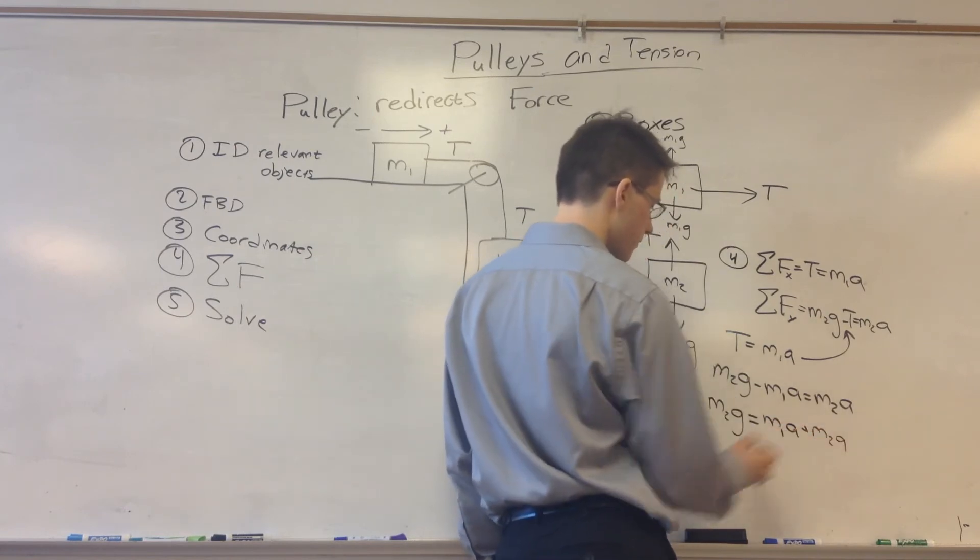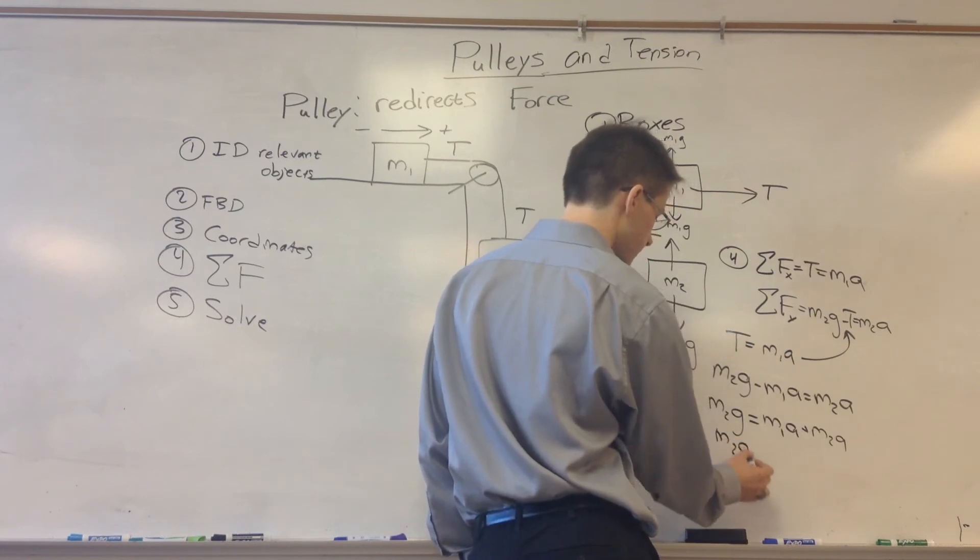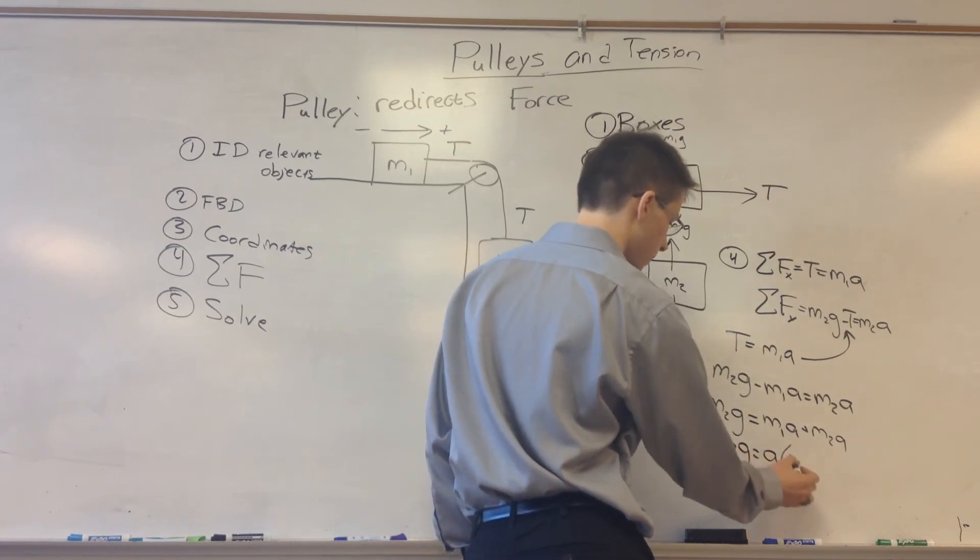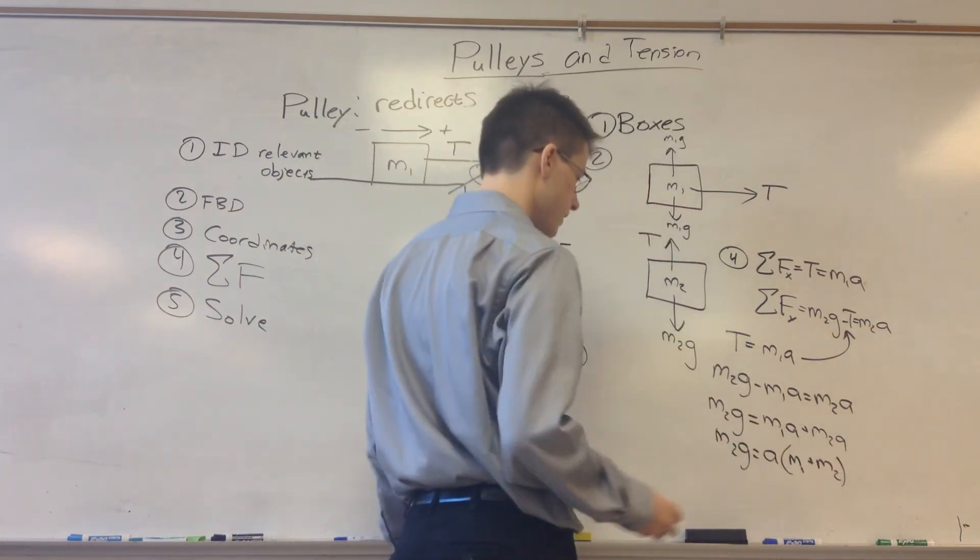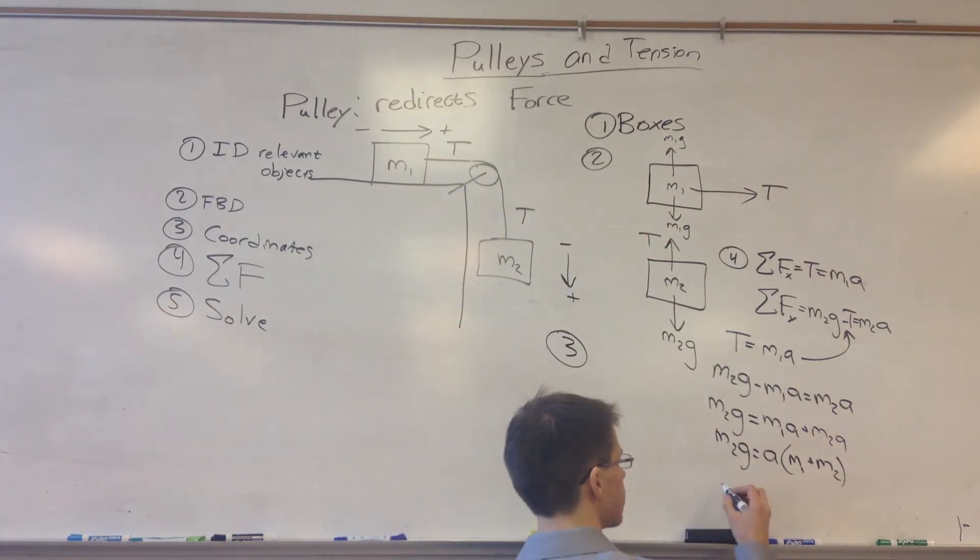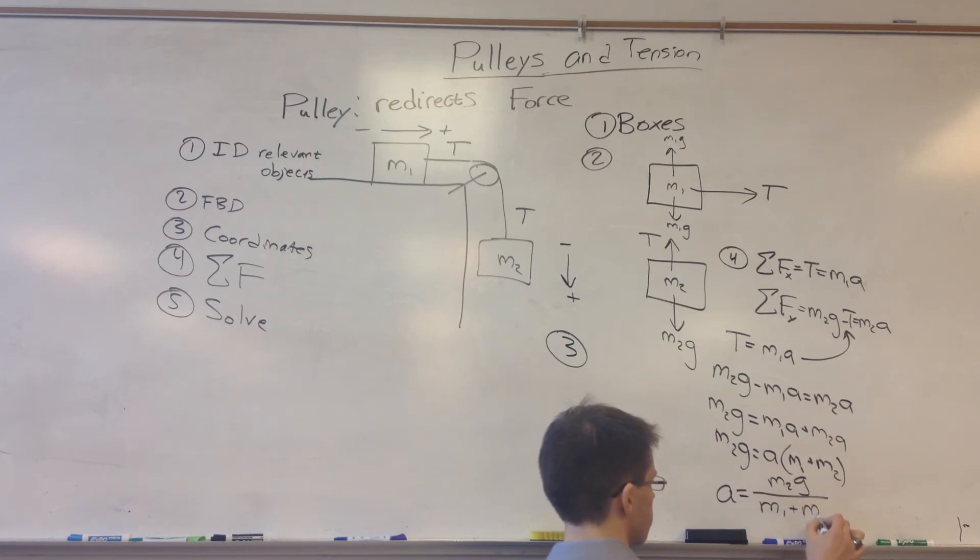Then we can divide both sides by m1 plus m2, and we get that a is equal to m2g divided by m1 plus m2. That's our acceleration.